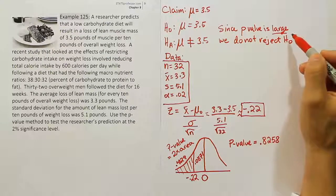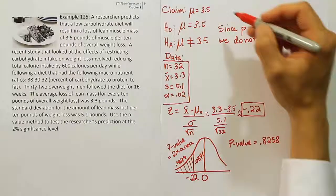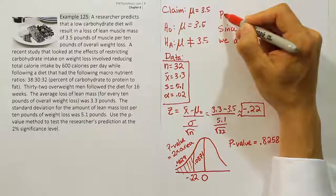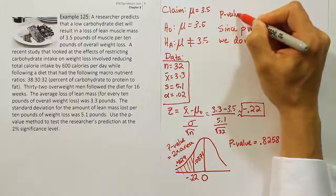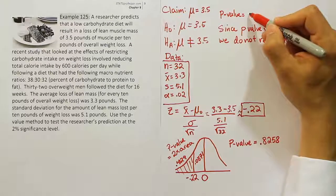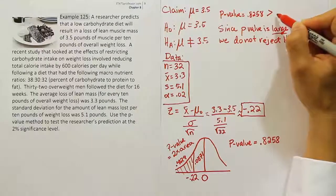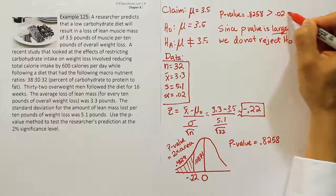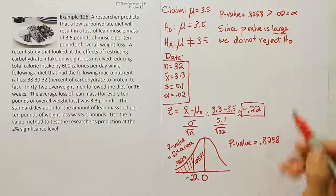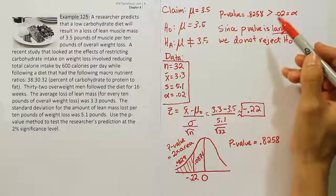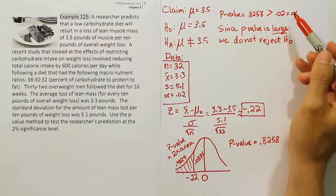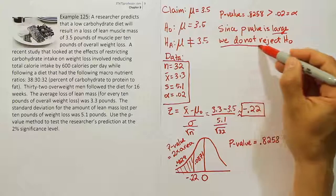We do not reject the null since the p-value is large. What do we mean by large? We mean that the p-value, which equals 0.8258, is greater than 0.02, which is alpha. Because that's true, whenever the p-value is larger than alpha, we do not reject the null hypothesis.